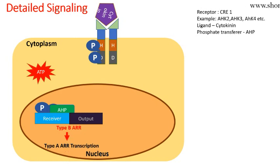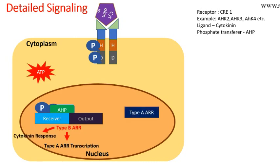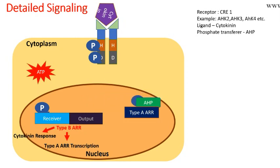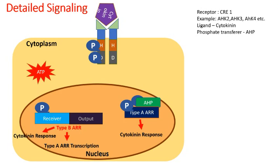Once Type B ARR's output is active, transcription of Type A ARR begins, because Type B ARR regulates Type A ARR transcription. Type B ARR also influences transcription of cytokinin response regulator genes, though in smaller amounts. Once Type A ARR is produced and present in the nucleus, AHP will also bind to and phosphorylate Type A ARR. As a result, Type A ARR starts producing cytokinin response mRNAs, which move from the nucleus to the cytoplasm and are translated into cytokinin response proteins.